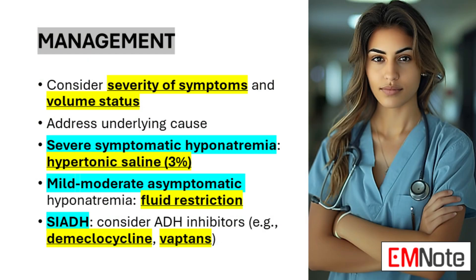Management. The management of hyponatremia requires a nuanced approach that takes into account the severity of symptoms, the patient's volume status, and the underlying cause. For asymptomatic or mildly symptomatic patients with chronic hyponatremia, fluid restriction alone may be sufficient. However, severe hyponatremia with significant CNS symptoms necessitates more aggressive treatment. In hypovolemic hyponatremia, the priority is fluid resuscitation with isotonic saline to restore circulating volume. Conversely, hypervolemic hyponatremia often requires fluid restriction and management of the underlying condition, such as heart failure or cirrhosis.